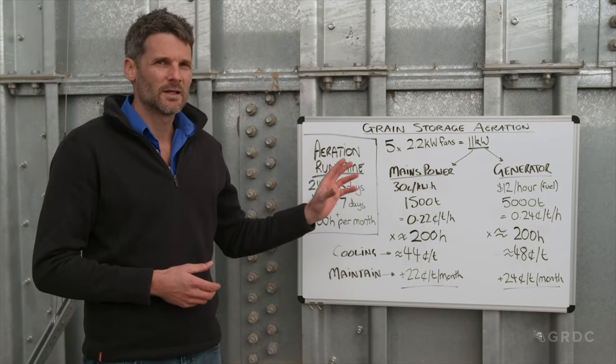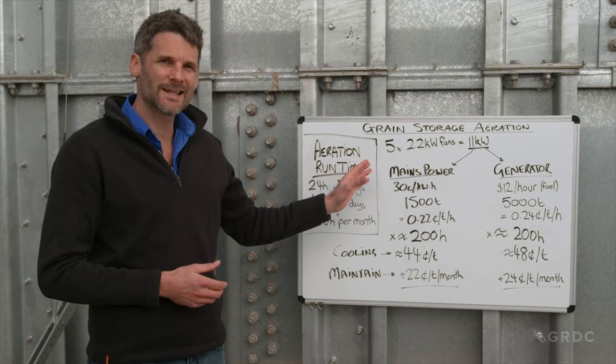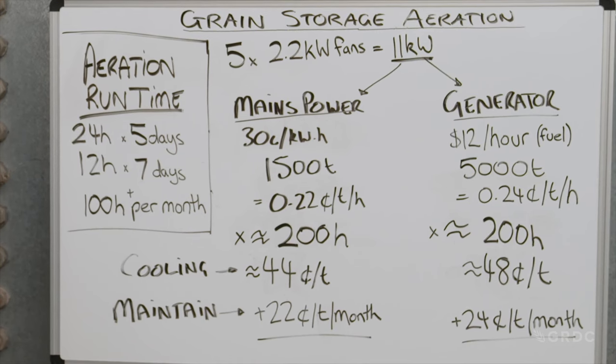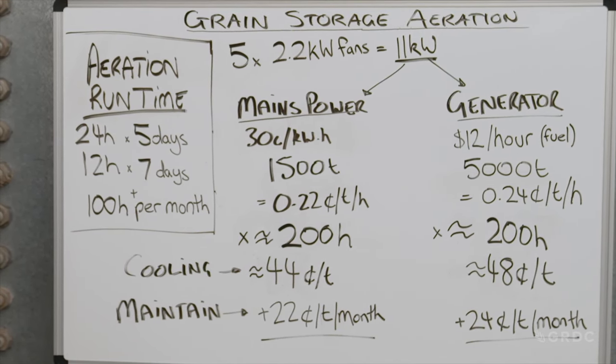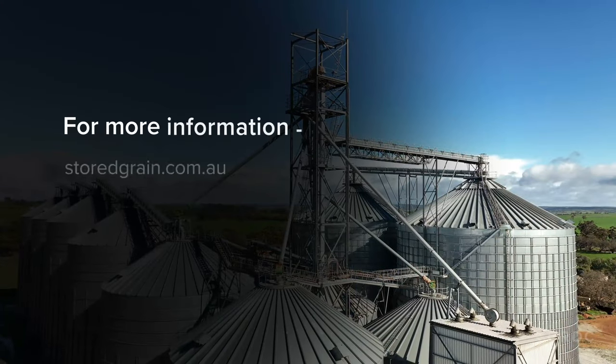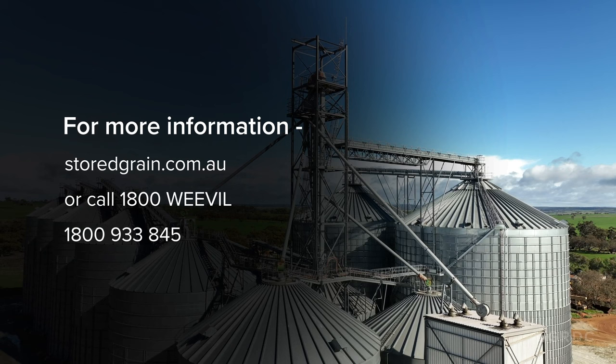The important thing is to use your own numbers when doing this calculation and figure out whether a generator or mains power is going to best suit your site. It's important to crunch your own numbers, in addition to working out the cost of getting power to site for your particular situation and plans. Those numbers should be relative to your own aeration equipment and also the site that you're planning. For more information, people can go to storedgrain.com.au or give one of the team a call on 1800 Weevil.